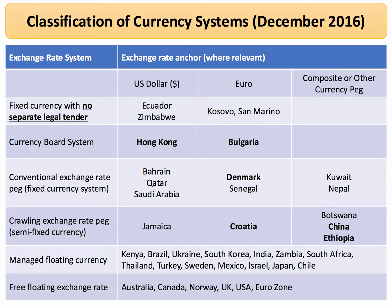These countries have central banks that are prepared to intervene in the market. Japan crucially does this many times as part of Abenomics. Some countries have a free floating exchange rate — relatively few, and they tend to be big countries: Australia, Canada, the United States, the UK, and the eurozone. The eurozone operates a floating exchange rate.